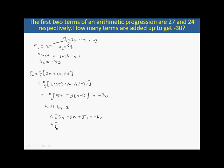n times (54 + 3), that's 57, minus 3n squared, equals negative 60. Or, 57n minus 3n² equals negative 60.